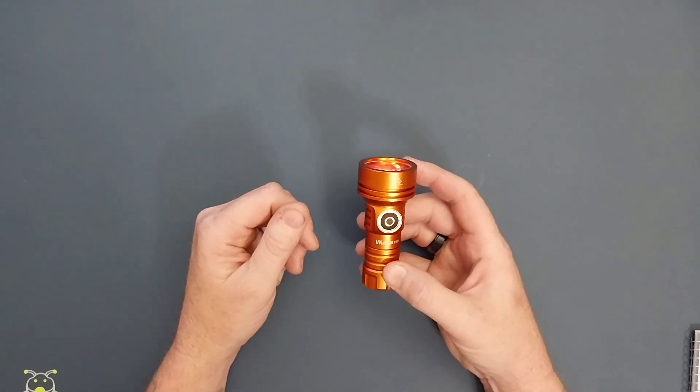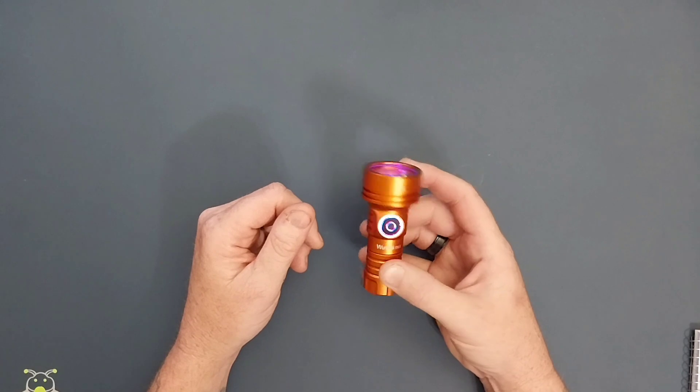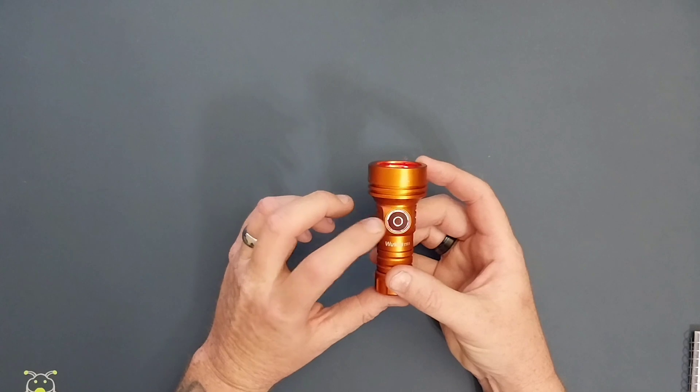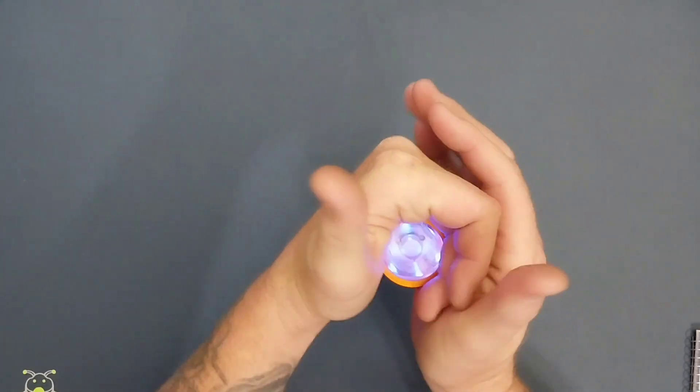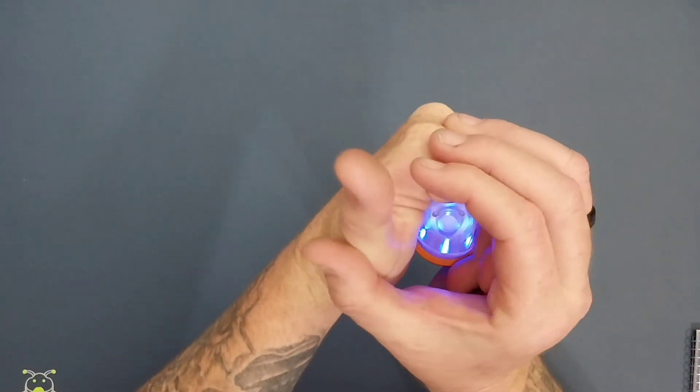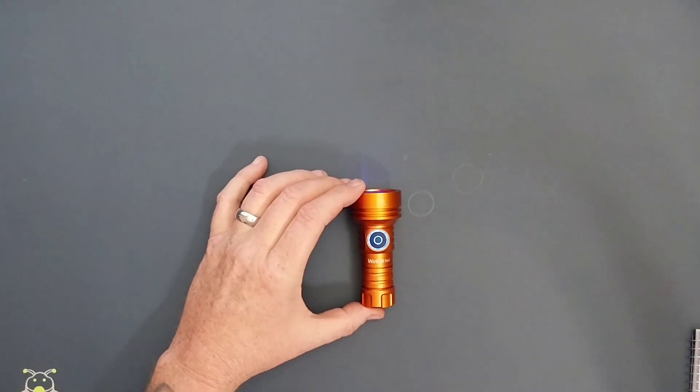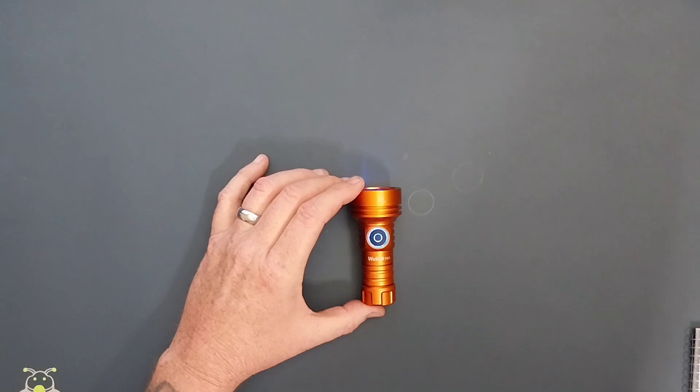Yeah, so like I said, it has the auxiliary RGB lights on the side switch as well as the top now. So let's switch over and take a look at some night shots and beam shots and we'll head on back in.